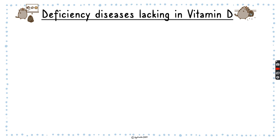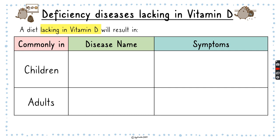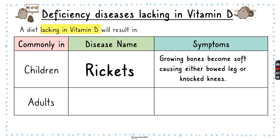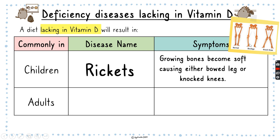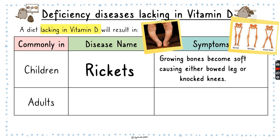Next is the deficiency disease from lacking in vitamin D. In children, the disease is called rickets. The symptom is that growing bones become very soft, causing either bowed leg or knocked knees. Bowed leg means the legs curve outward like a bow, as shown in the image — the person isn't doing it on purpose, that's them resting and their legs are already bowed. Knocked knees is the opposite, going inward.